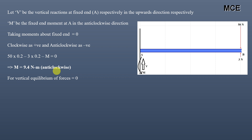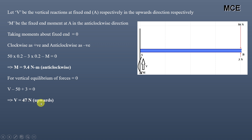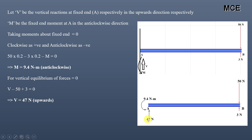For vertical equilibrium: V − 50 + 3 = 0, giving V = 47 N upward. Both results are positive confirming our assumed directions are correct. So at fixed end A: vertical reaction V = 47 N upward and moment M = 9.4 N·m anti-clockwise.